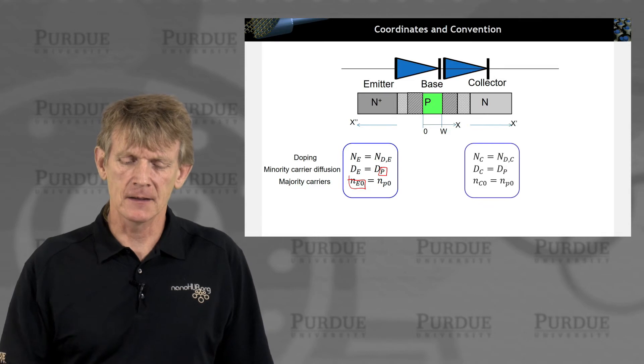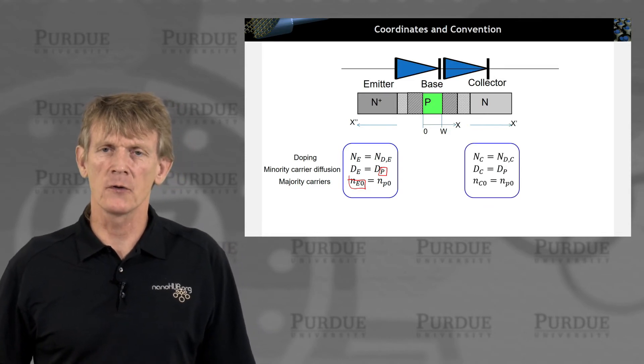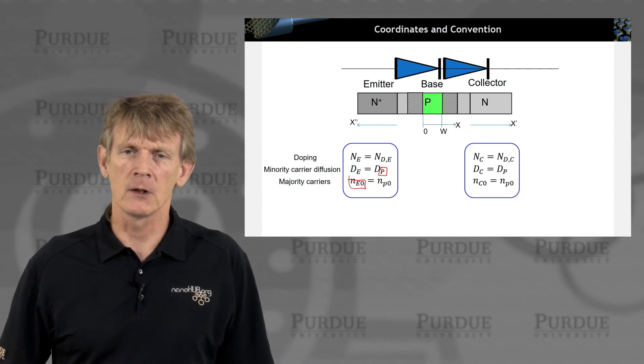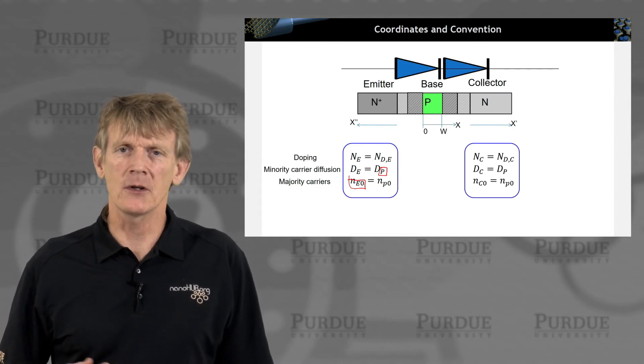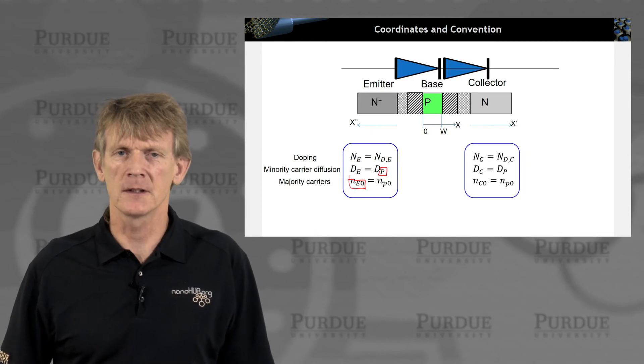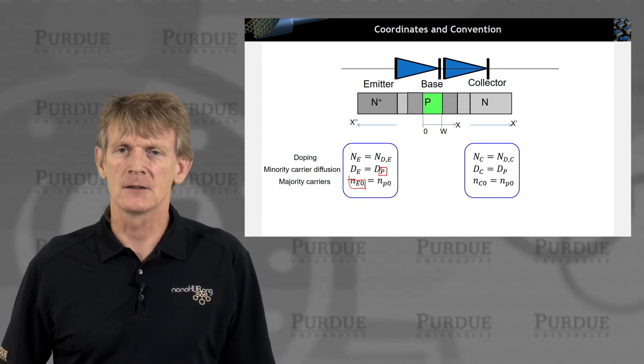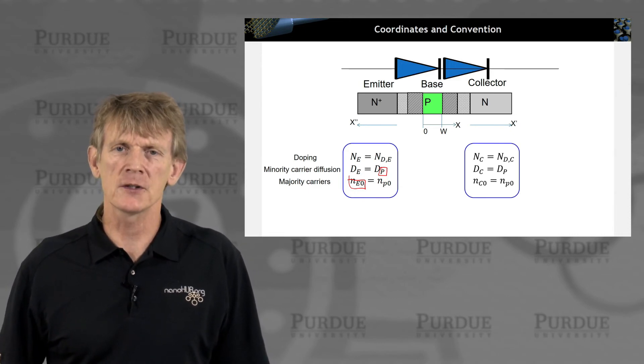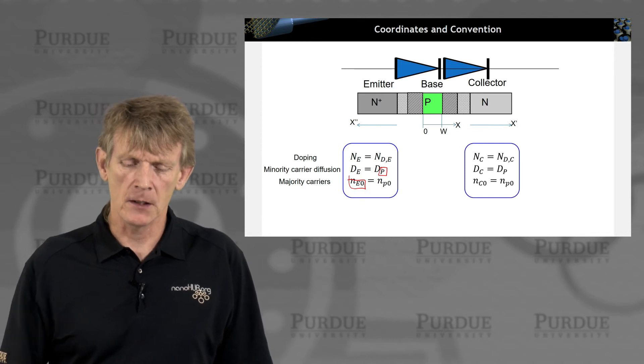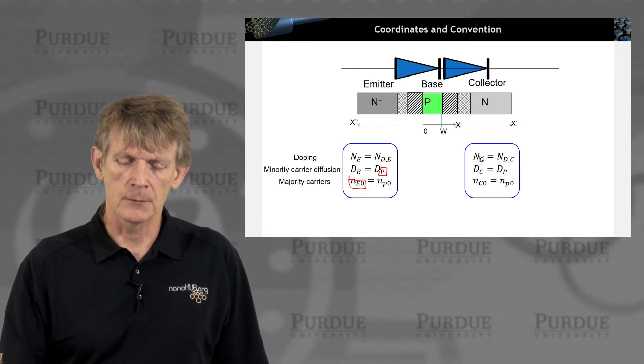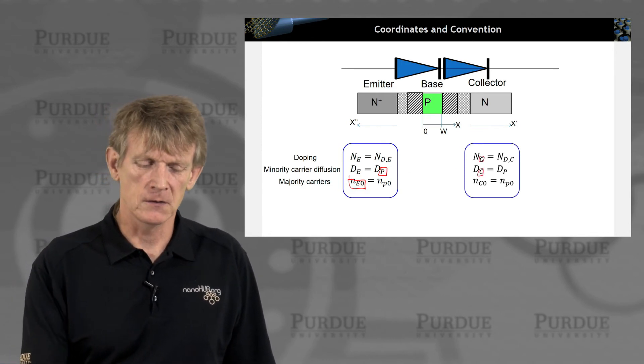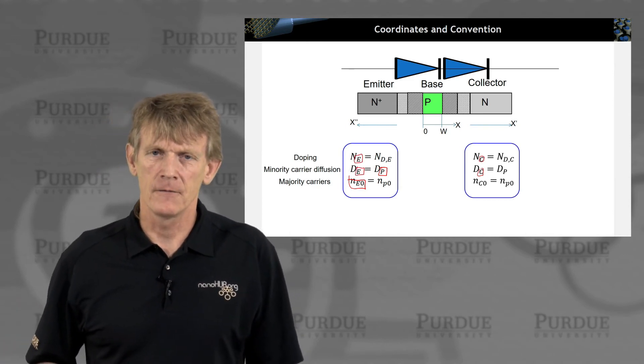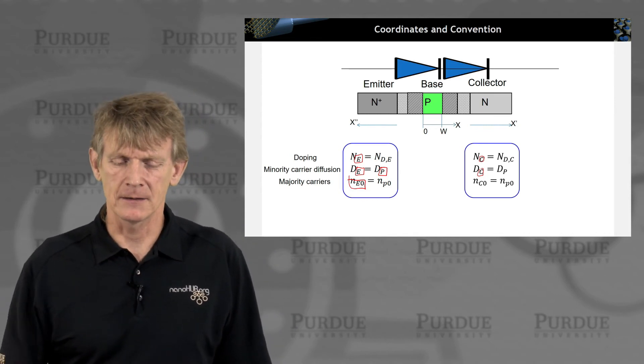On the other end side, we also have diffusion coefficients, and donor dopings, and an electron concentration in equilibrium. But obviously, they can be different. The doping can be different. There can be other treatments for the diffusion coefficient, different traps, different recombination. So therefore, these coefficients are different. We need to give them a name. We index them with a subscript C versus the subscript E. Otherwise, the content of these variables, the meaning is the same. We just need to index them.